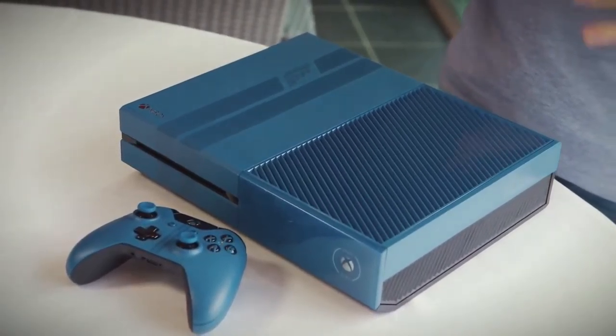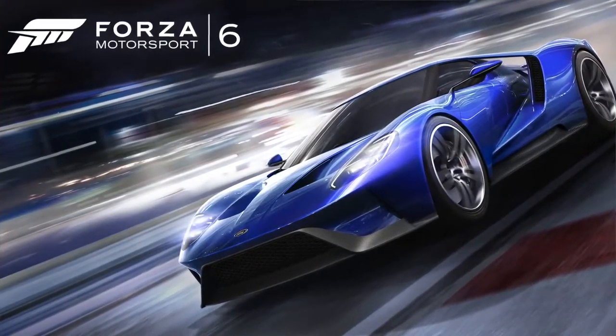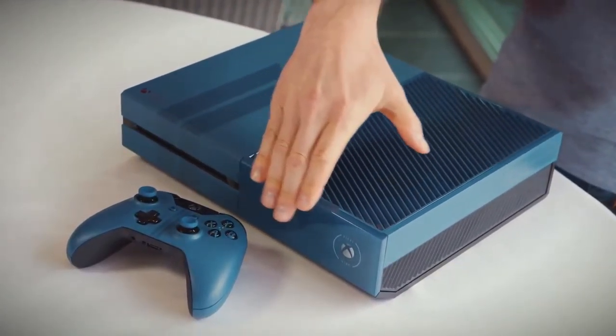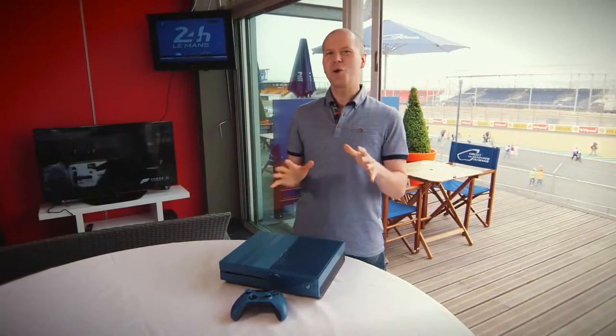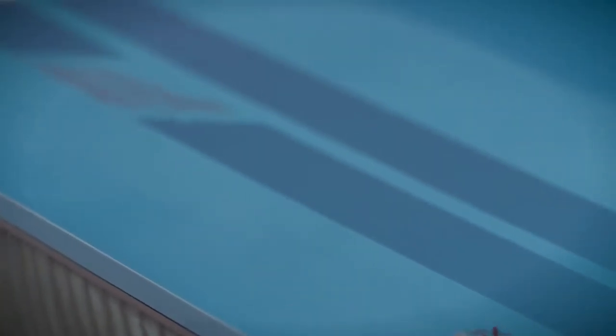First of all, the console's look and color have been inspired by the Forza Motorsport 6 cover car, the all new Ford GT. It has a really smooth matte finish on this side and a really sleek gloss finish on this side. Then nothing quite says Ford GT like the iconic racing stripes, so we've added them to the console as well.